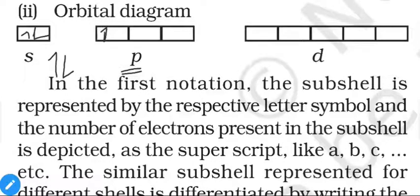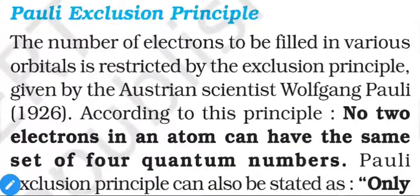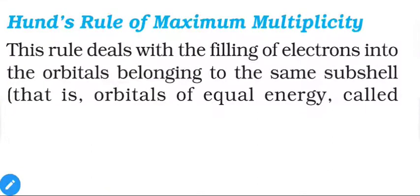For p orbitals: first electron enters the first box. If adding another electron to the same orbital, it must have opposite spin. This is Pauli's exclusion principle. Hund's rule of maximum multiplicity deals with filling electrons into orbitals of the same subshell. If electrons have the same spin they contribute to overall spin multiplicity; opposite spins cancel each other's effect.